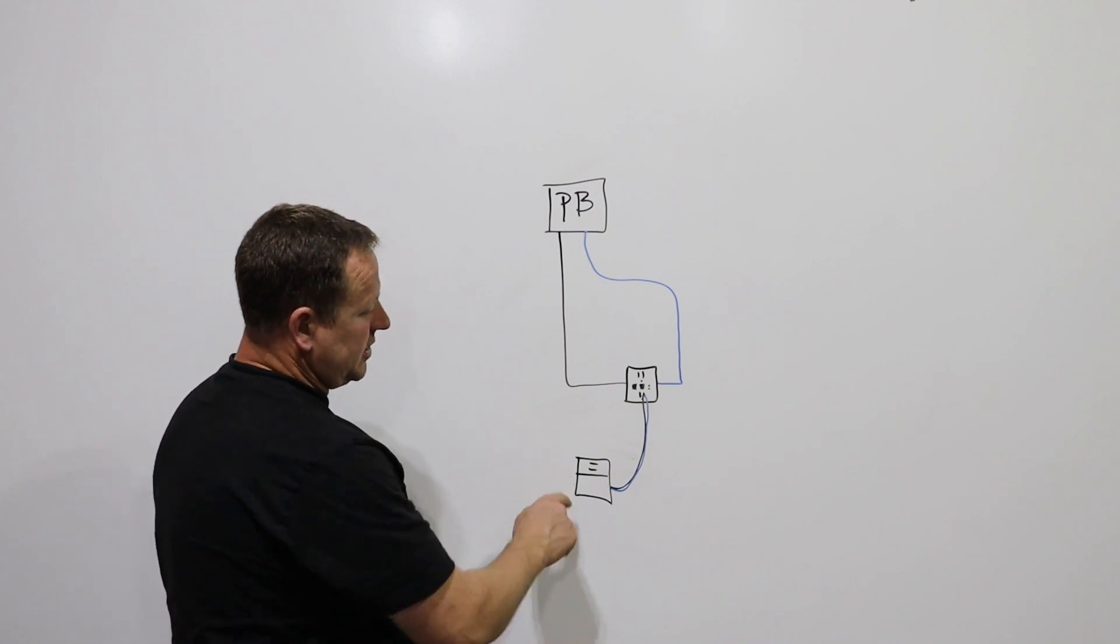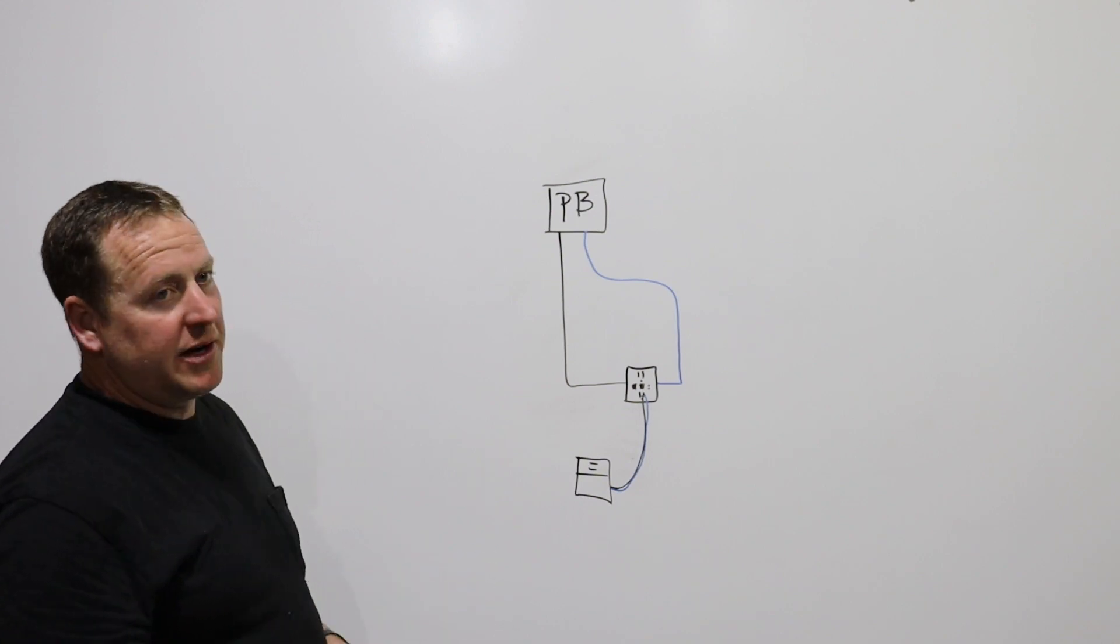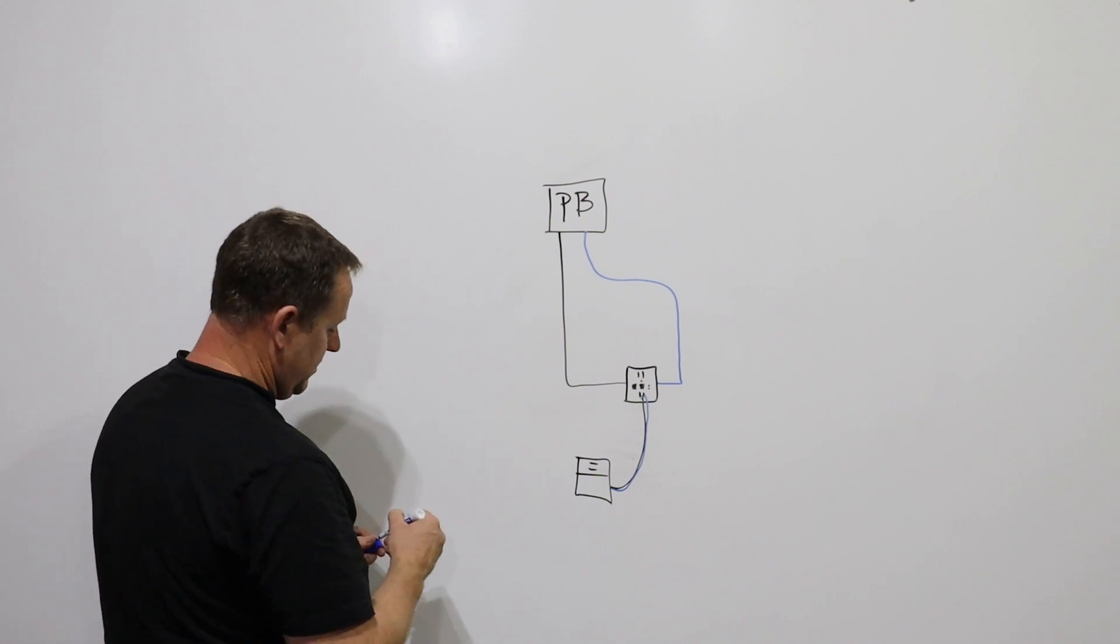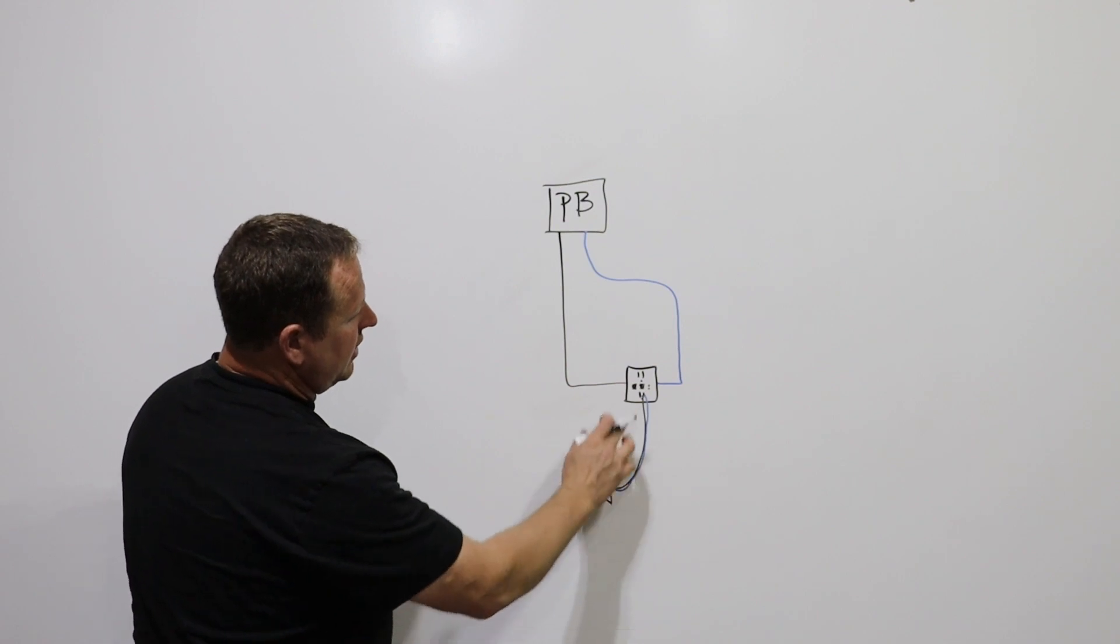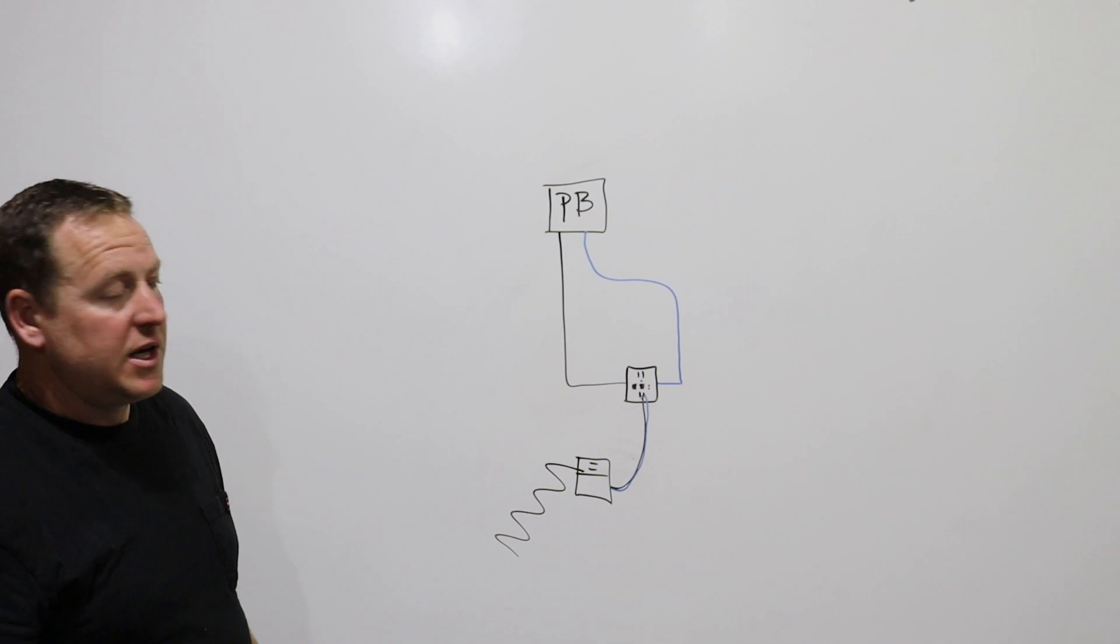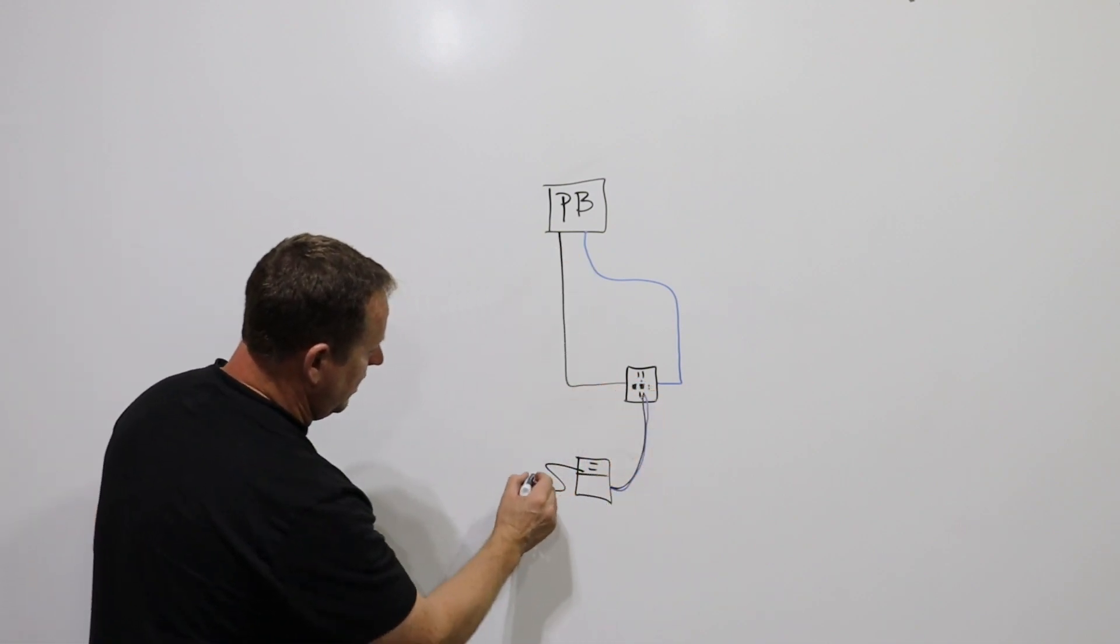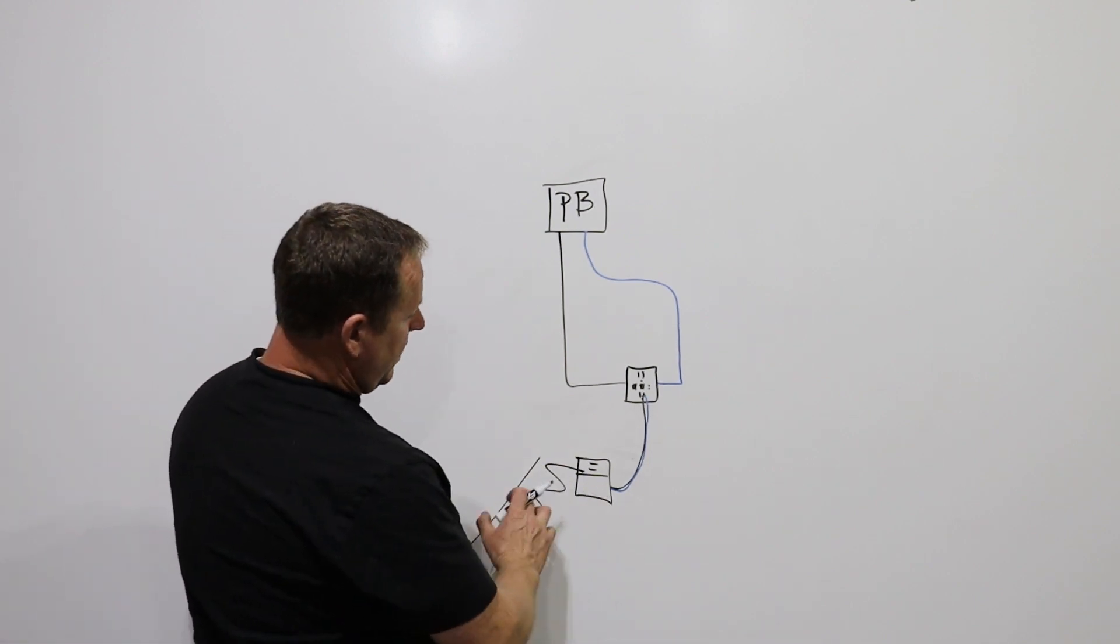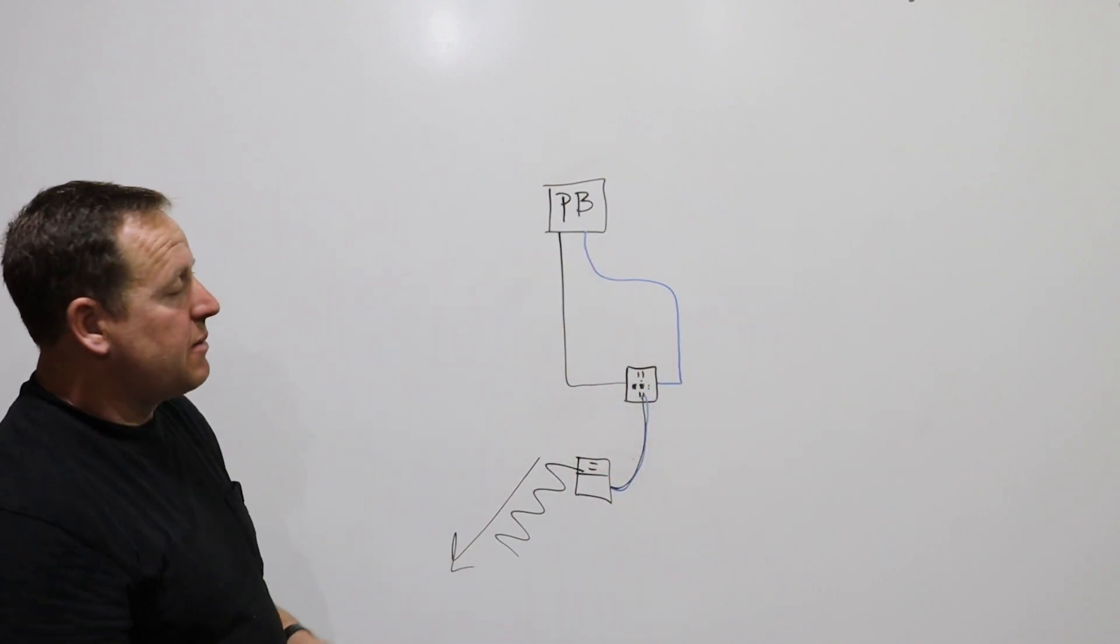Let's say you push the toaster down, and everything's going fine, your morning's going great, and all of a sudden, you accidentally spill your coffee on the toaster. Now, your circuit is not only the circuit here, your circuit is also the coffee all over. Now, the power is going from the hot, down to the toaster, and then some other place, hopefully not through you. But a lot of that power is not making it back through the neutral, back to the panel box.